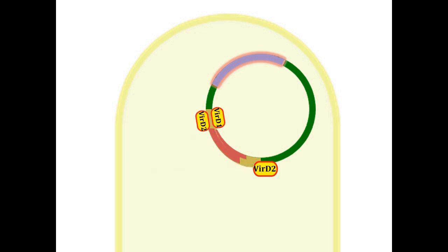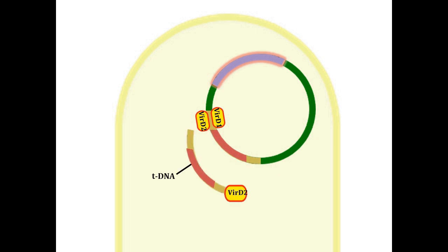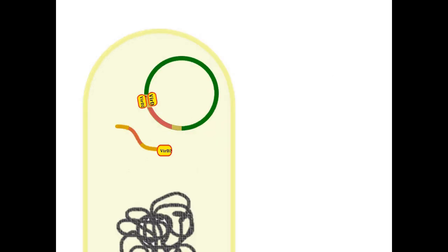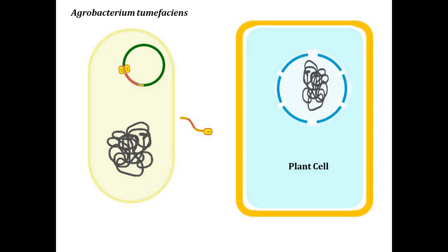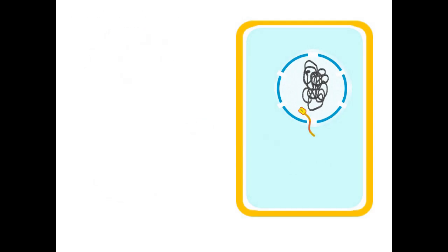The cell produces single-stranded T-DNA molecules that remain attached to VIR-D2 at one end. VIR-D2 directs the transfer of the T-DNA into a plant cell and eventually into the nucleus in a process similar to bacterial conjugation. Within the plant cell nucleus, the T-DNA gets integrated into the genome.